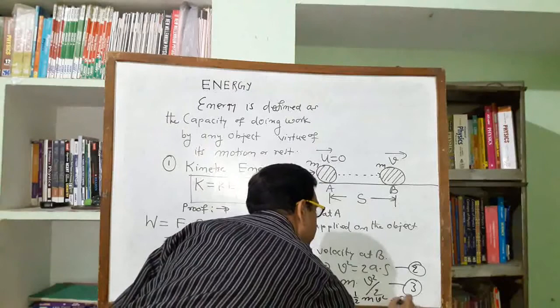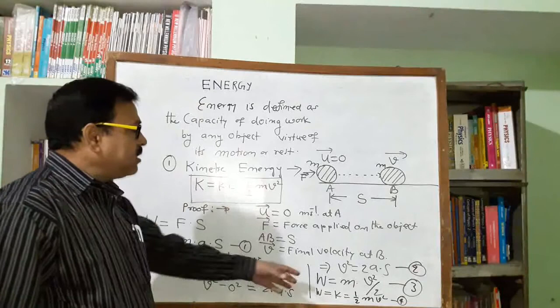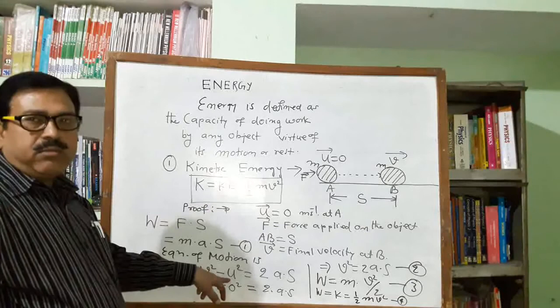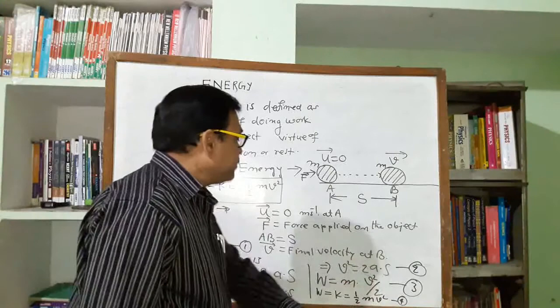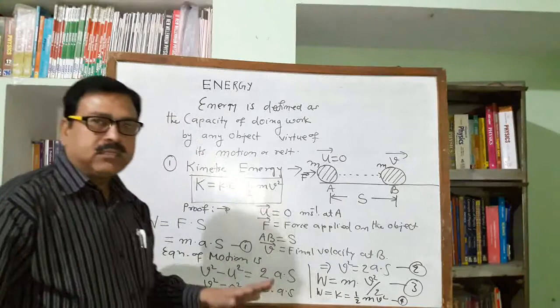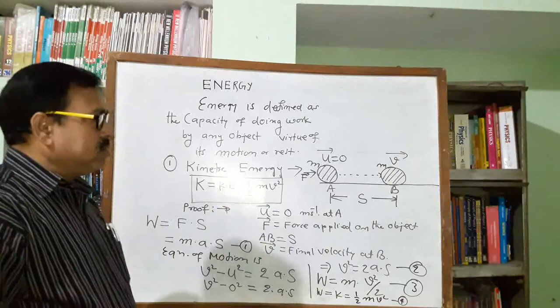We have got the final expression for kinetic energy: K equals half mv squared. This uses the equation of motion v squared minus u squared equals 2as, and with the state of rest condition v squared equals 2as, substituting into equation 1 gives us half mv squared. This work done is stored as kinetic energy.